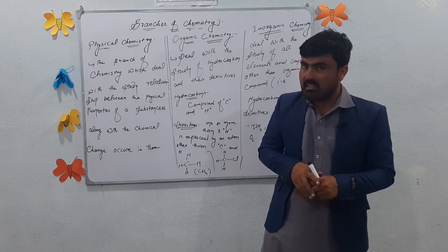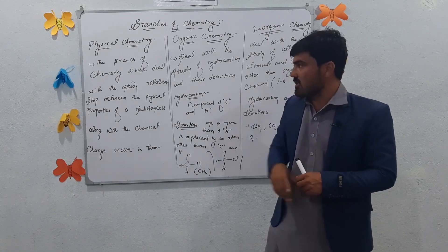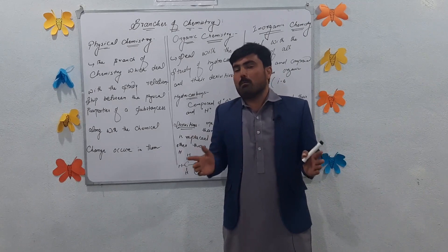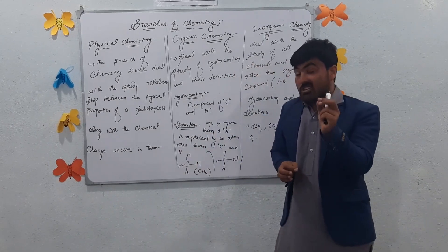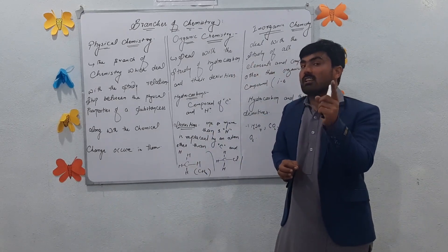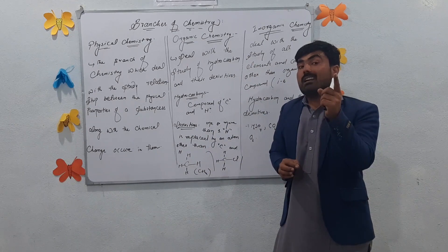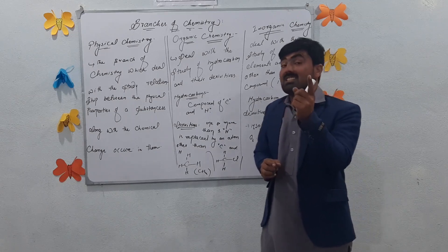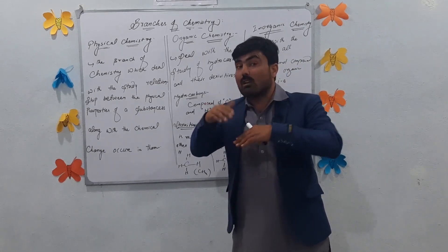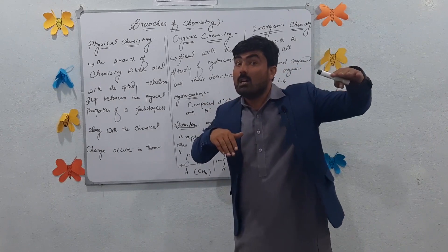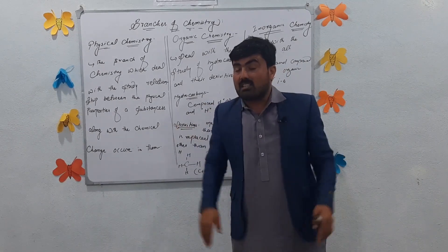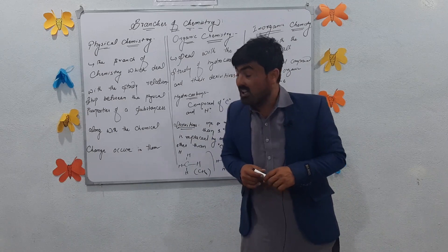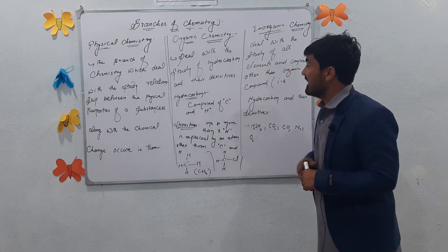That branch of chemistry is called physical chemistry. Physical chemistry is the first branch. The first relationship involves chemical change — chemical change leads to physical change. The second branch of chemistry is organic chemistry.